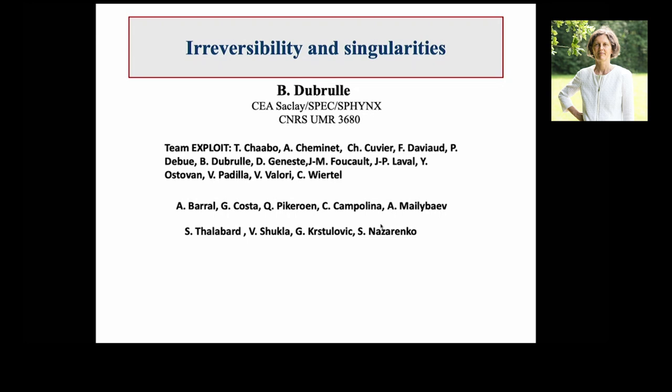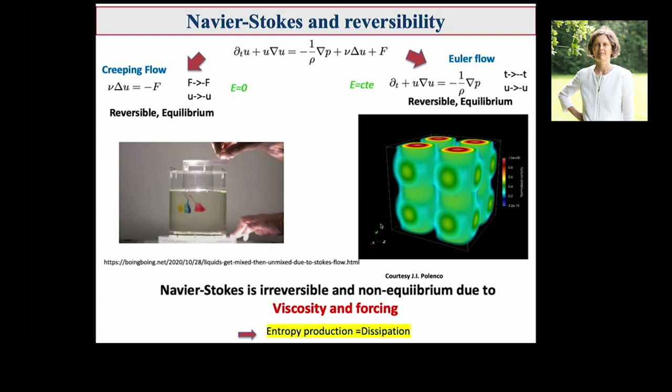Since we are a school, let me start slowly and define what I mean by irreversibility or reversibility. Starting from Navier-Stokes, there are two limits in which you can observe some sort of reversible dynamics. The first limit is if you have a very viscous flow — we call it a creeping flow or Stokes flow. In that case, the viscous term dominates, and you have a kind of equilibrium between dissipation and forcing.